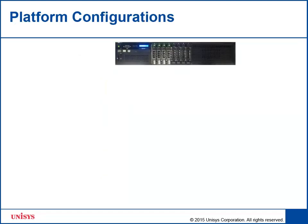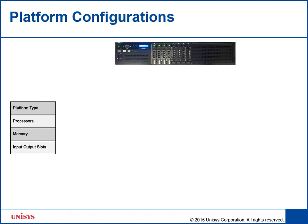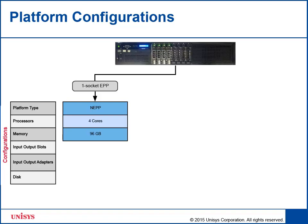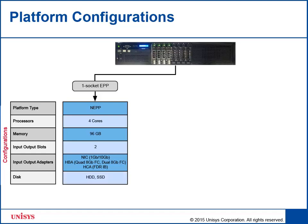There are various types of platform configurations supported by Forward Fabric. One socket EPP is available for NEPP platform type only, and consists of 4 core processors with up to 96 GB of memory. It has two input-output slots and uses input-output adapters such as NIC of either 1 Gigabit or 10 Gigabits, HPA of Quad 8 Gigabits and Dual 8 Gigabits Fiber Channel, and HCA of FDR Infini Band. This platform has two types of disks: Hard Disk Drive or HDD, and Solid State Drive or SSD.